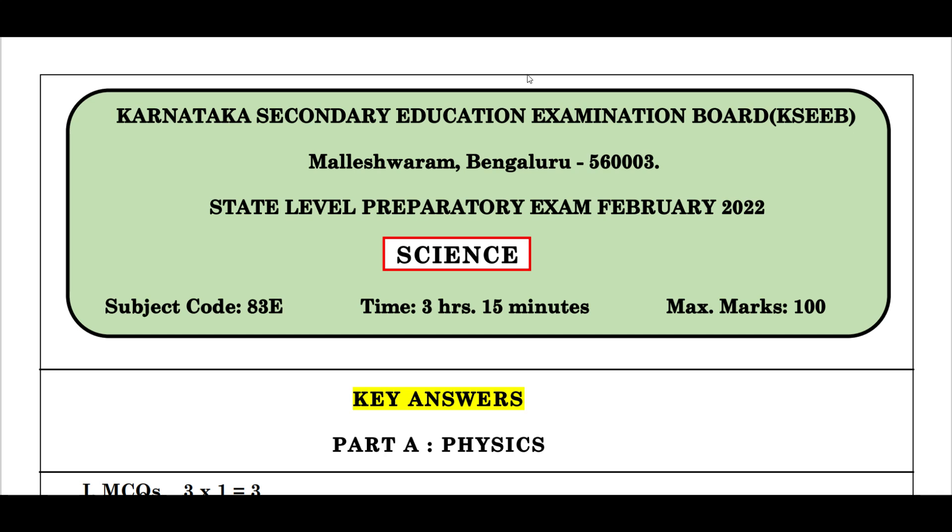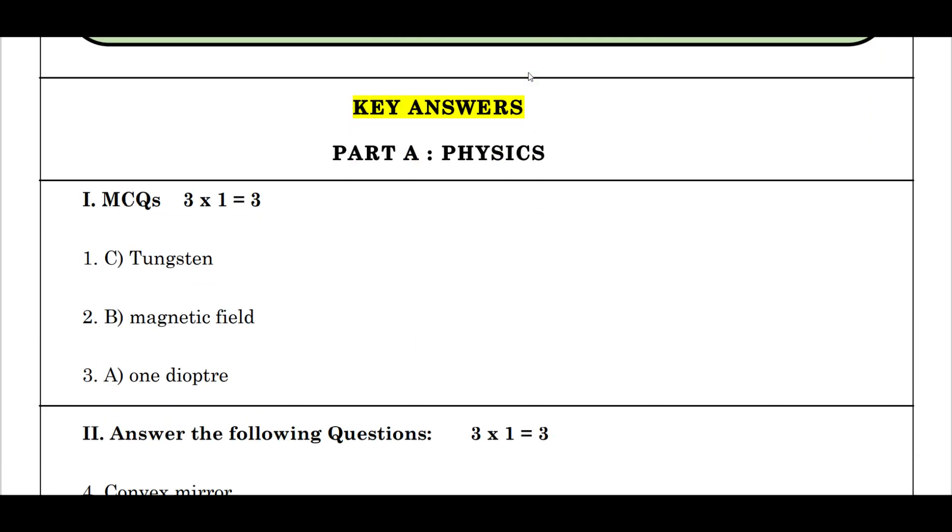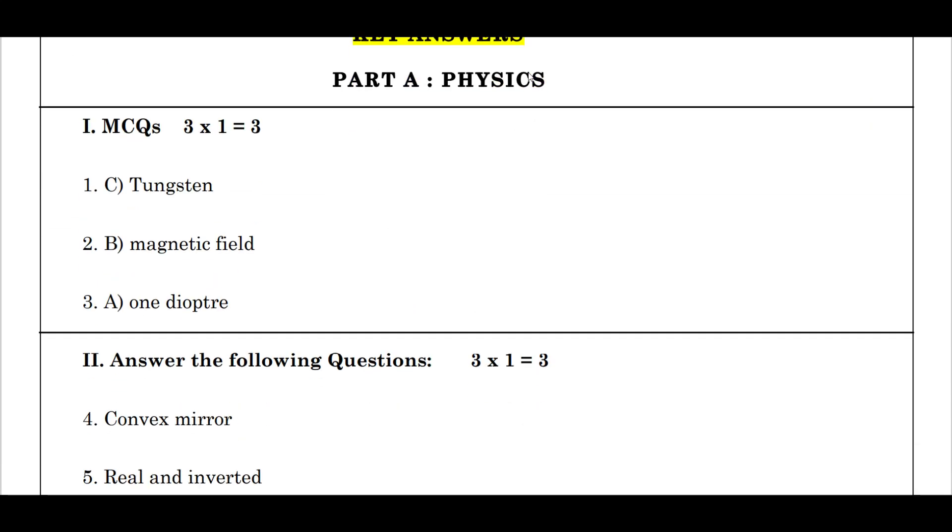Moving to Part A: Physics. First question: the material used in the filament of an electric bulb is - it is option C, tungsten. Second question: in Fleming's right hand rule, the four fingers indicate the direction of - it's option B, magnetic field. Question three: the power of the lens with one meter focal length is - the power of lens is what, one diopter.